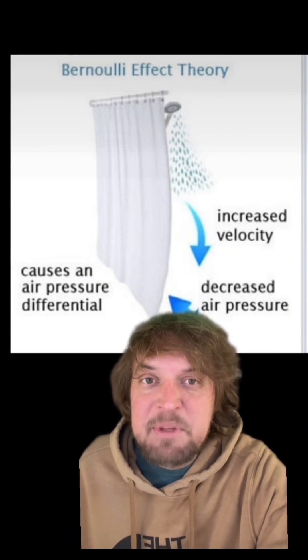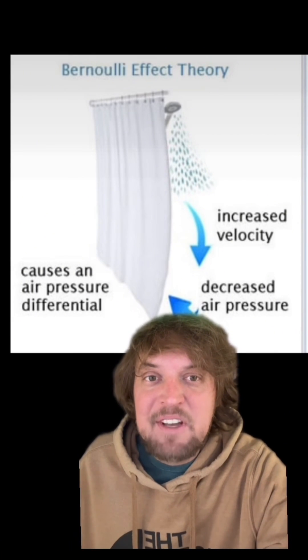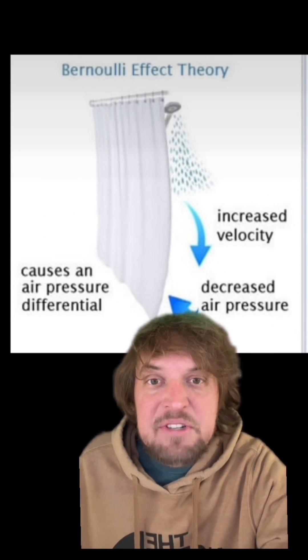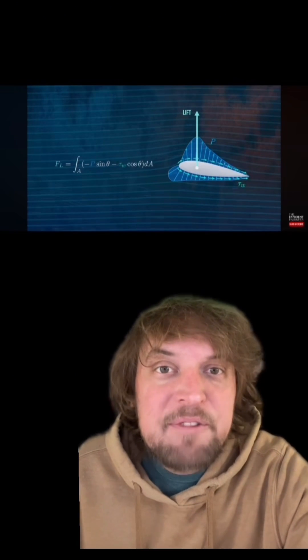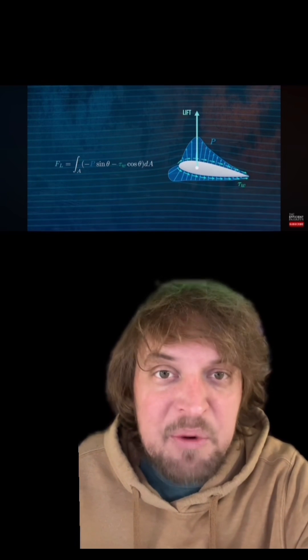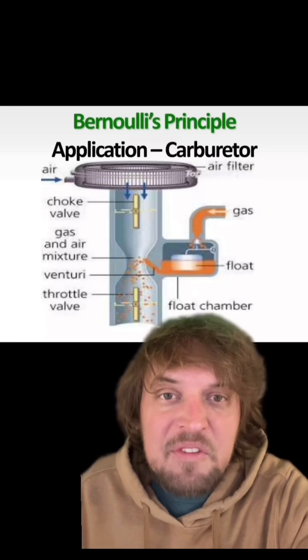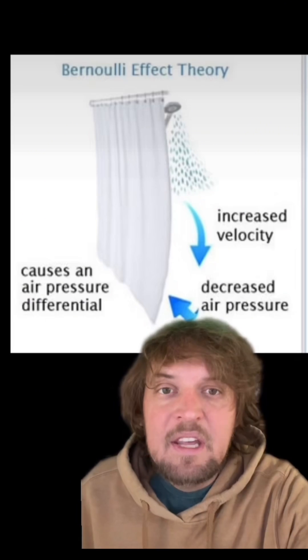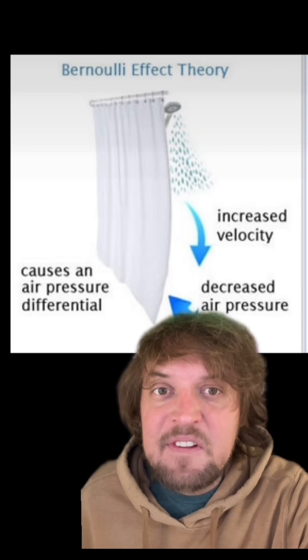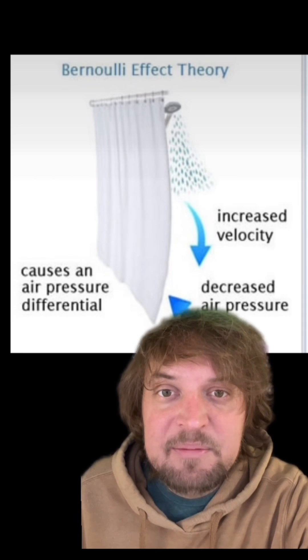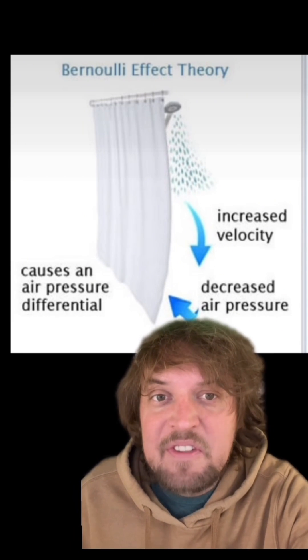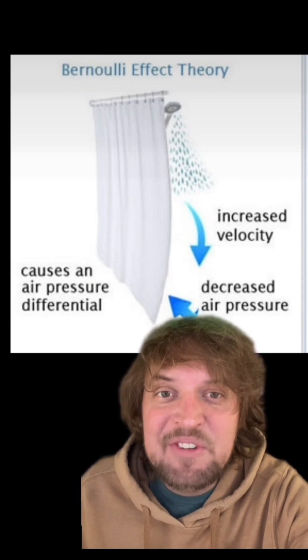The most popular explanation has been the Bernoulli effect, which holds that air pressure decreases as a fluid speed increases. It's got a lot of applications — like calculating the lift on an airplane wing — and it's also the reason carburetors work. In the case of the shower, the thinking is that the rapid speed of the water increases the speed of the air around it, creating negative pressure which sucks the shower curtain in towards you.